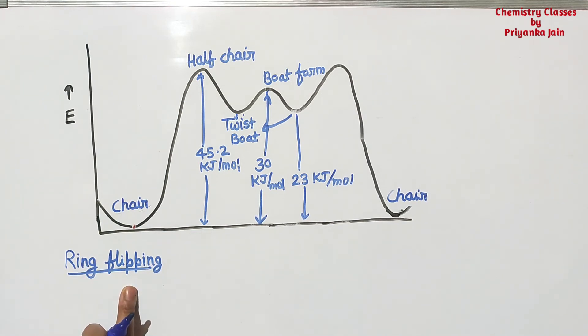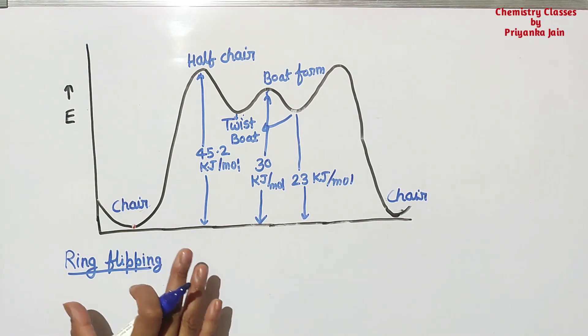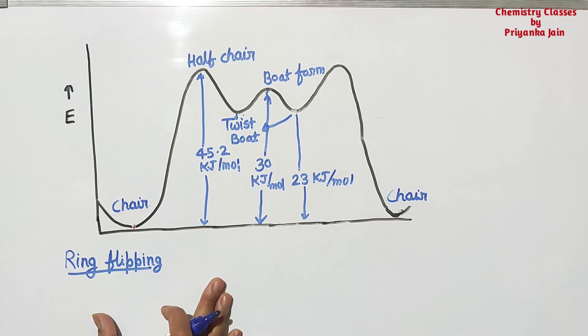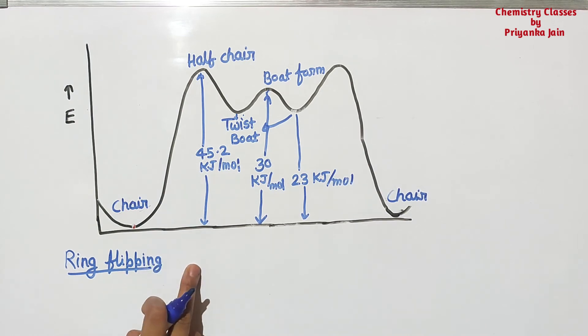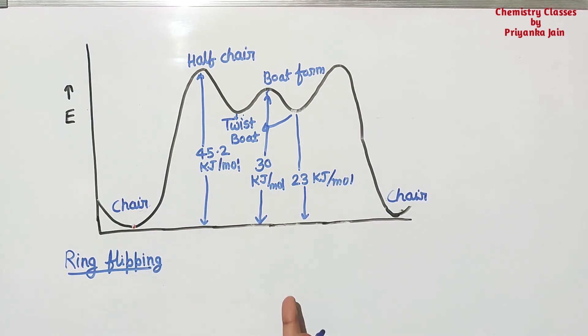Whenever there is ring flipping, the equatorial hydrogens will change to axial and the axial hydrogens will change to equatorial.